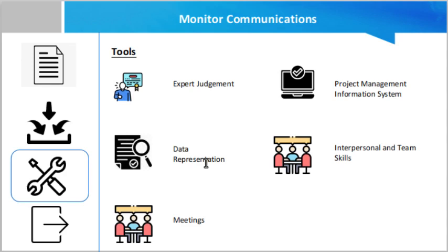This is achieved by reviewing changes between desired and current engagement and adjusting communication as necessary. Interpersonal and team skills that can be used for this process include observation and conversation — discussion and dialogue with the project team helps determine the most appropriate way to update and communicate project performance.